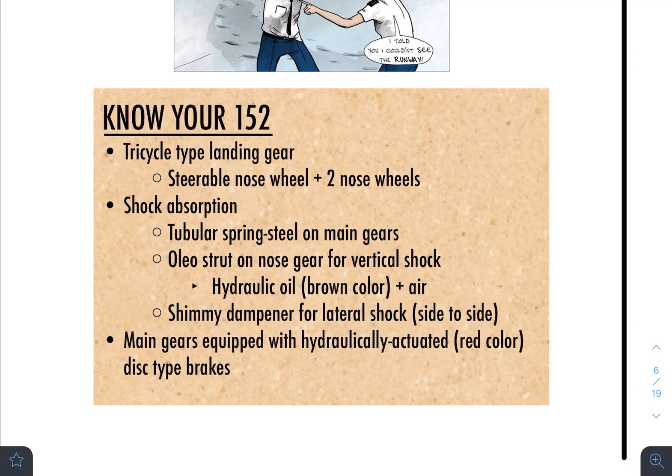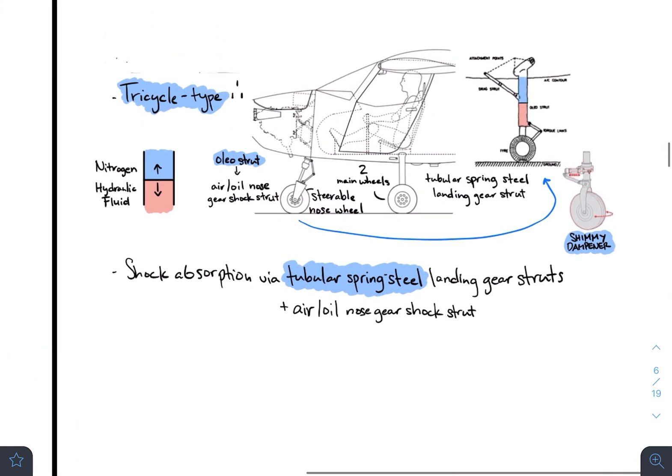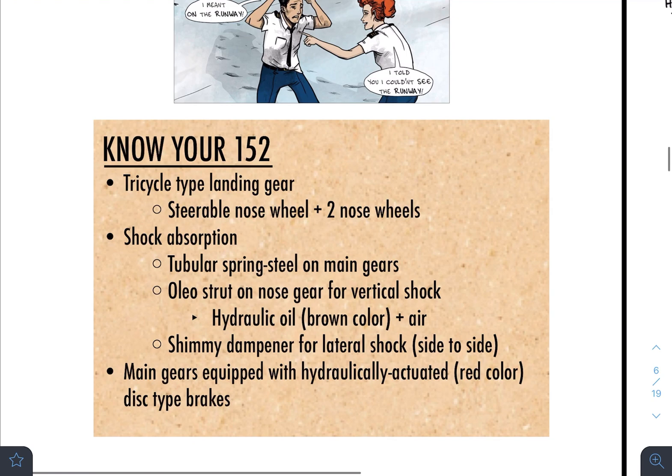So as far as knowing the landing gear, this is a tricycle type landing gear. When we say tricycle type, think of a bicycle with two wheels. Now think of tricycle. You got the one wheel on top and you got the two wheels on the bottom. That's exactly what the plane is like. There's the one wheel over here and you have your two main wheels over on the side. That's a tricycle type landing gear.